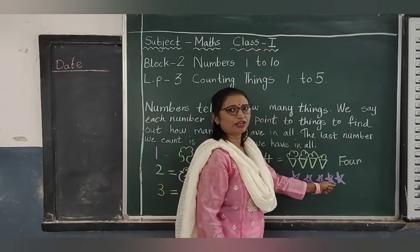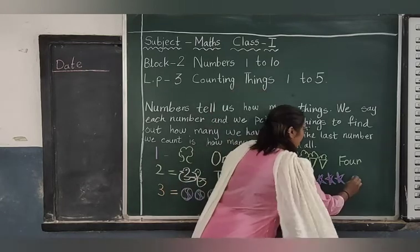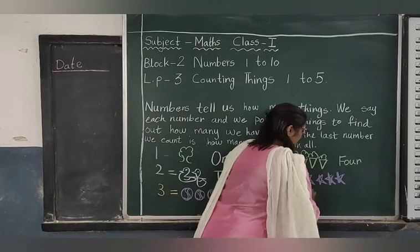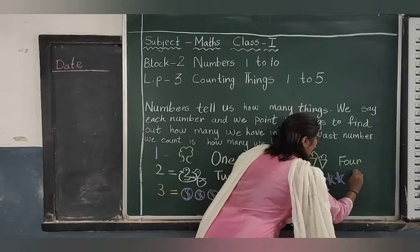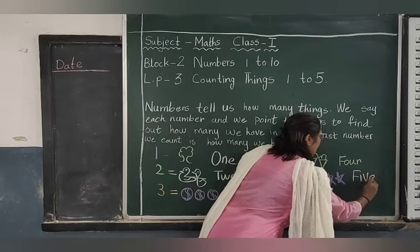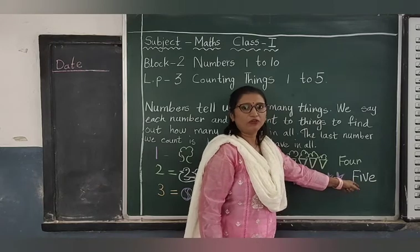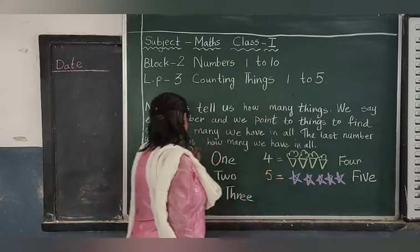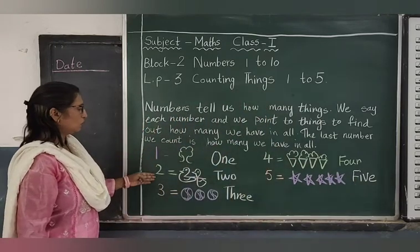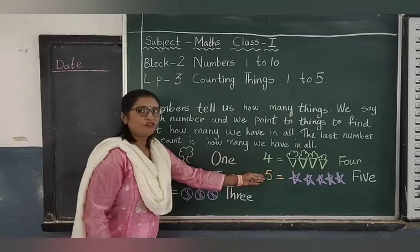Now I have to write the number in it. 1, 2, 3, 4, and 5. F-I-V-E, 5. See, children: 1, 2, 3, 4, 5.